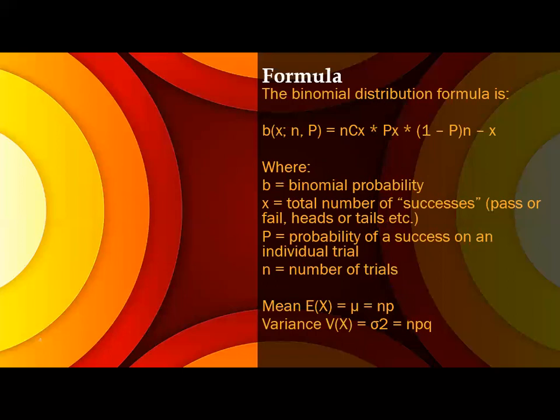For the binomial distribution, the mean and variance will vary. The mean will be n into P, and variance will be npq.